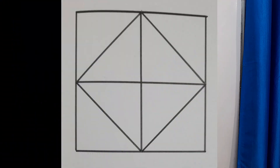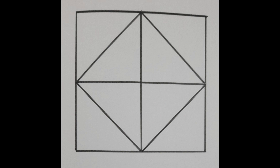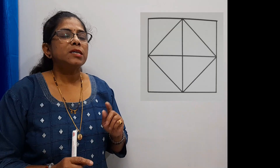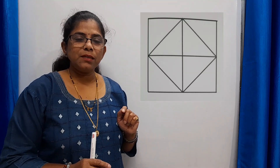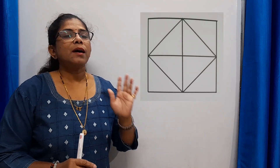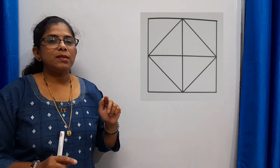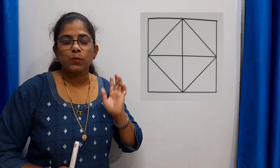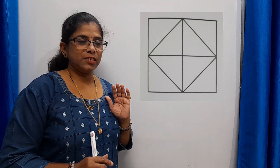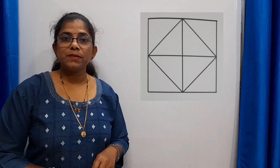There is one more type. Just have a look at this figure — it is a square with a plus sign and one additional diamond-shaped square inside it. When you come across this type of figure, the total number of squares is 6: the 5 from the plus-sign square, plus the one diamond-shaped square.